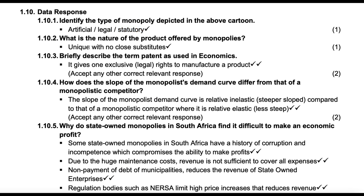What is the nature of the product offered by monopolies? It is unique. Then briefly describe the term patent — it gives one exclusive right to manufacture a product; you are the sole provider of a good, and that is legal, so you actually register a patent. The demand curve for a monopoly is inelastic, while the one for monopolistic competition is highly elastic.